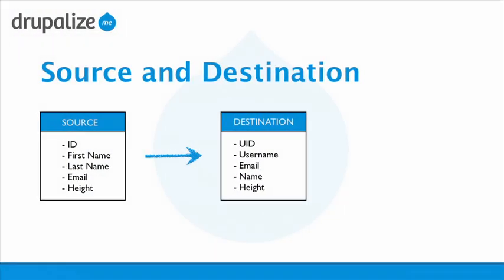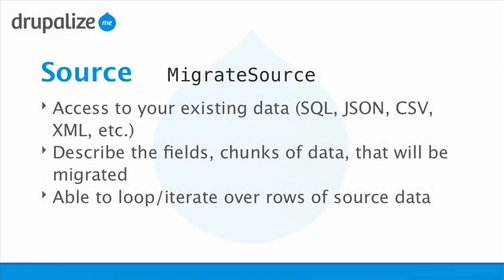Source and destination are two terms you'll hear a lot when talking about migrations. Source is the place that data currently lives - this might be an existing database, an existing website, or even an existing Drupal database. Destination, with the migrate module, is almost always Drupal, since it's really geared towards taking data out of some different source and importing it into Drupal. The migrate module implements a base class named MigrateSource, which we extend to extract data from different sources like an SQL database, a JSON file, or a CSV file.